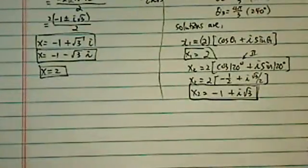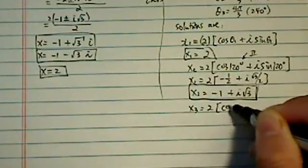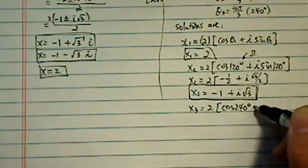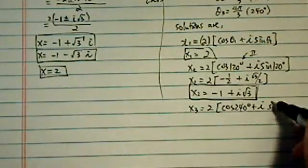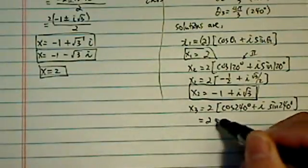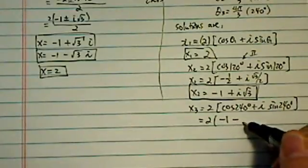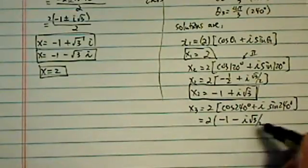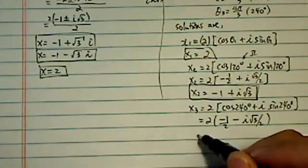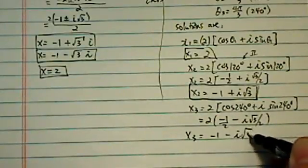One more to go, x3 is equal to 2 times cosine 240 degrees plus i sine 240 degrees. And this is the 2 times, let's see what I have, minus 1 minus i radical 3. So x3 is equal to minus 1 minus i radical 3.